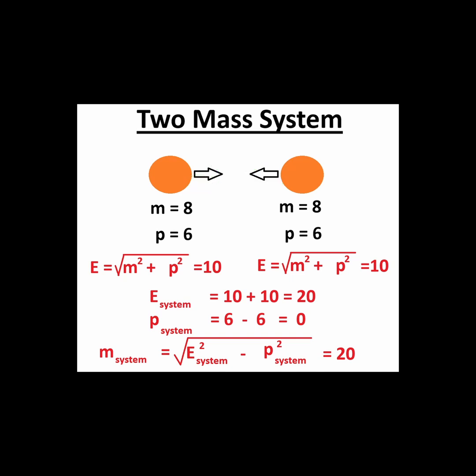Thus if we calculate the mass of the system of objects, we get a mass equal to the square root of the system energy squared minus the system momentum squared, which gives a value of 20.